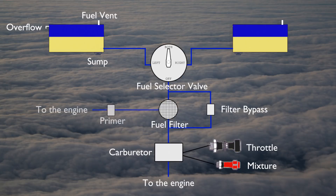A fuel primer is used to inject fuel from the fuel tanks directly into the engine. This is commonly used to aid engine starting in cold weather. Fuel primers are used on low and high wing airplanes alike.